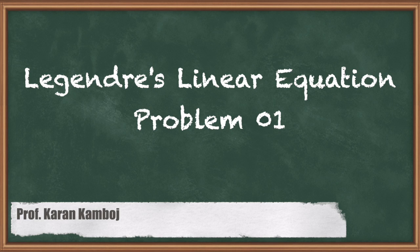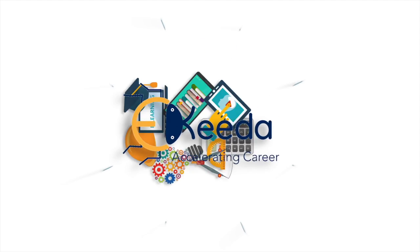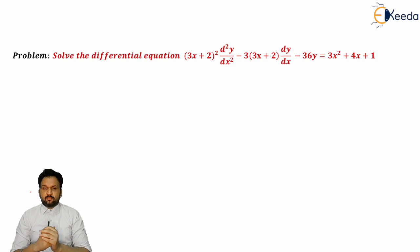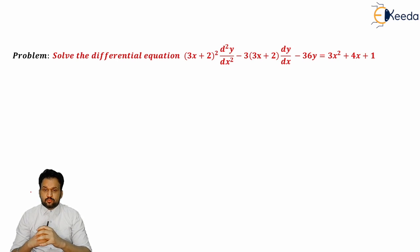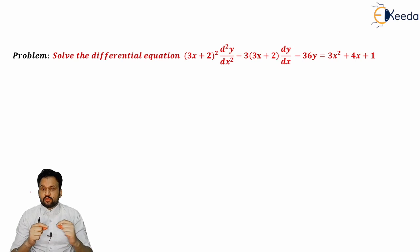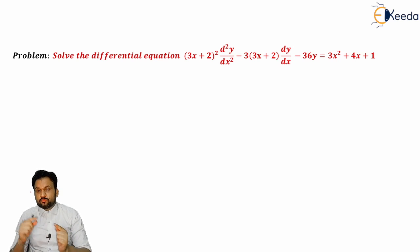Hi friends. In this video we will learn about the problem related to Legendré's differential equations, which are also known as equations reducible to homogeneous form. Here I am giving you one example in order to find solutions of problem number one. The problem is: solve the differential equation (3x+2)² d²y/dx² - 3(3x+2) dy/dx - 36y = 3x² + 4x + 1. This is a second order differential equation in purely Legendré form. We will reduce this equation to the homogeneous form.